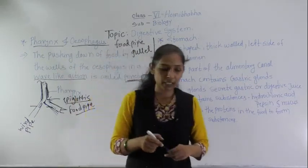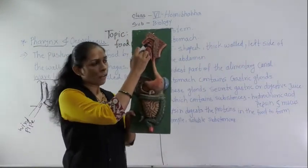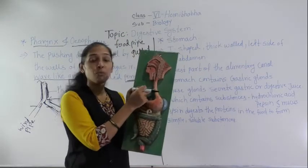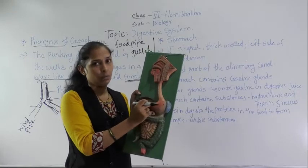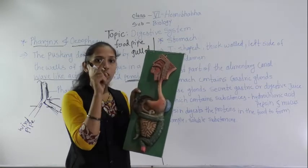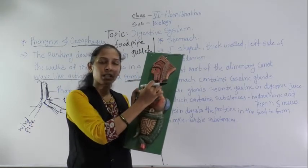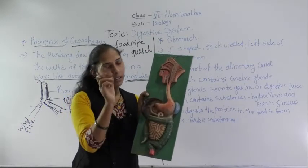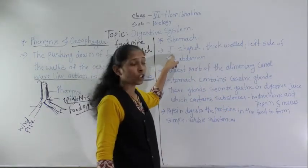Now we will move to the next digestive organ — the stomach. We have discussed the buccal cavity and the esophagus, which is also called the food pipe or gullet. The function of the food pipe is to transport food to the stomach, joining the buccal cavity and the stomach. The semi-digested or partially digested food comes into the stomach via the esophagus.